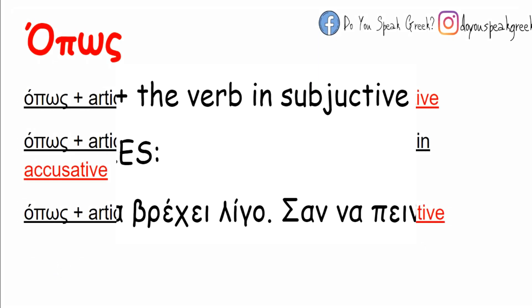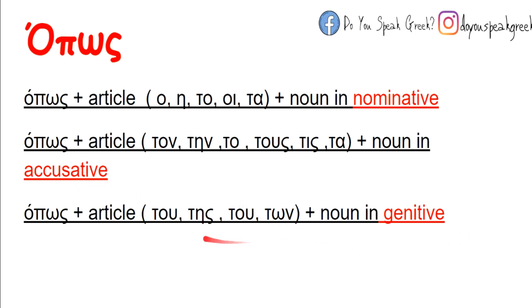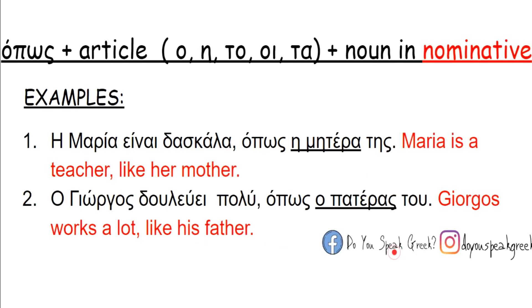If you have any questions, please write them in the comments. Now let's move on to όπως. Όπως also means 'like' or 'as', but the syntax is different. We can use it with all cases — nominative, accusative, and genitive — always with an article before the noun.